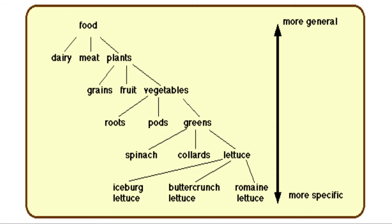Within plants, you can talk about grains, fruit, or vegetables. Within vegetables, you can talk about the roots, the pods, and the greens. When talking about greens, you can get even more specific to spinach, collards, or lettuce. Or we can really dive deep into lettuce and talk about iceberg lettuce, buttercrunch lettuce, and romaine lettuce.